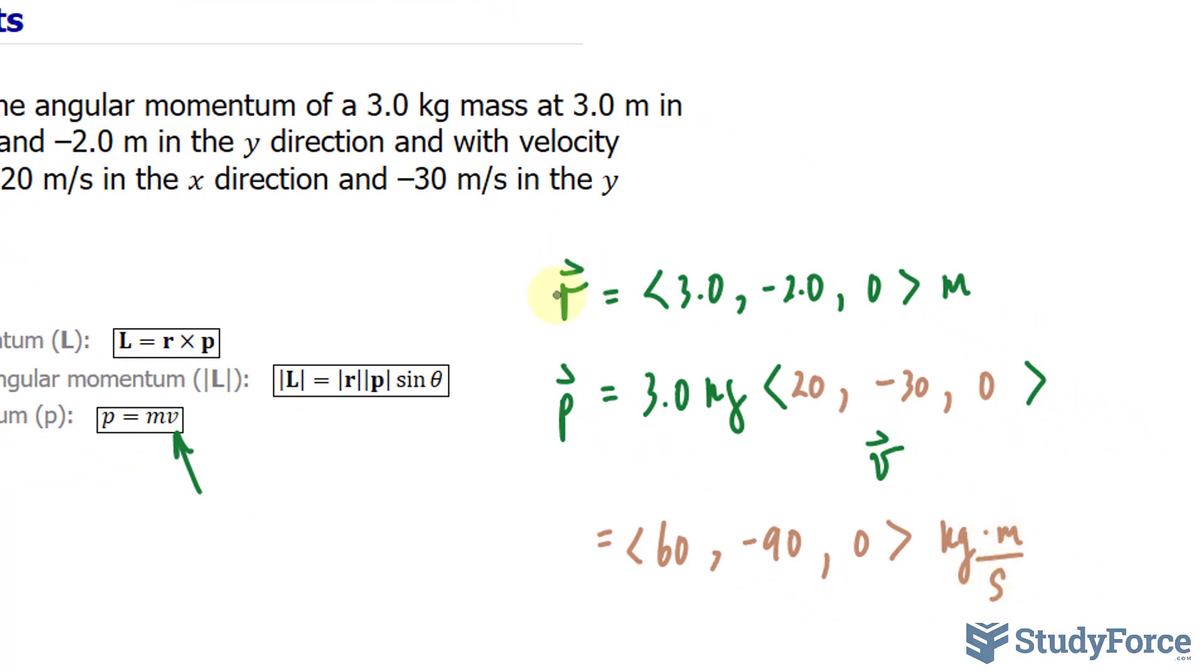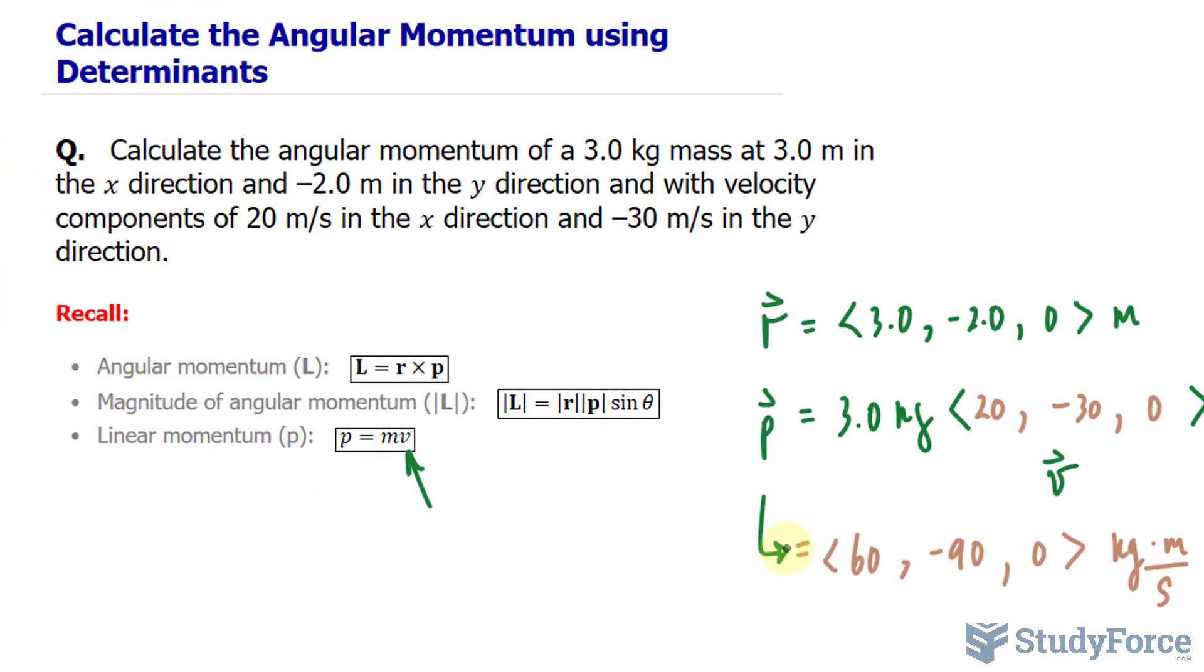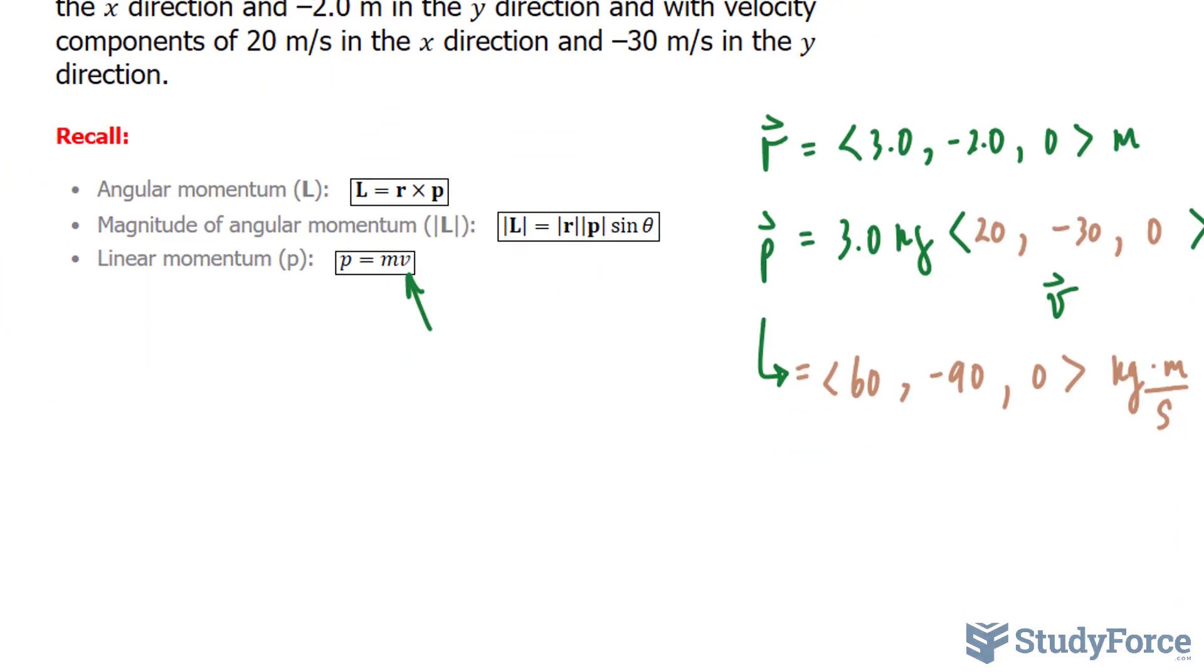So these two vectors, r and p, will be used to help us find the angular momentum. To find the cross product between r and p, we have to find the determinant for a 3 by 3 matrix.